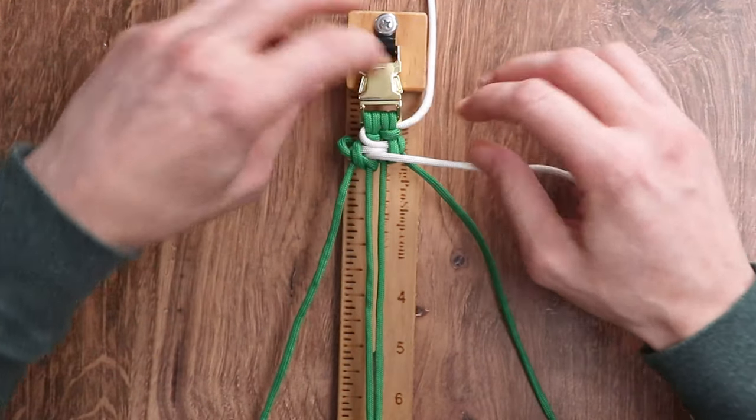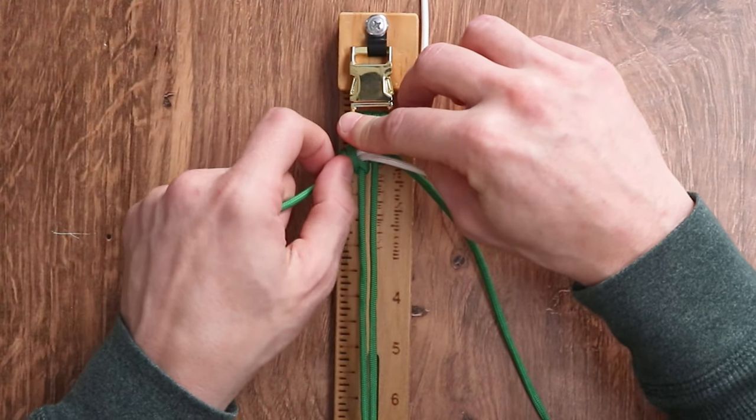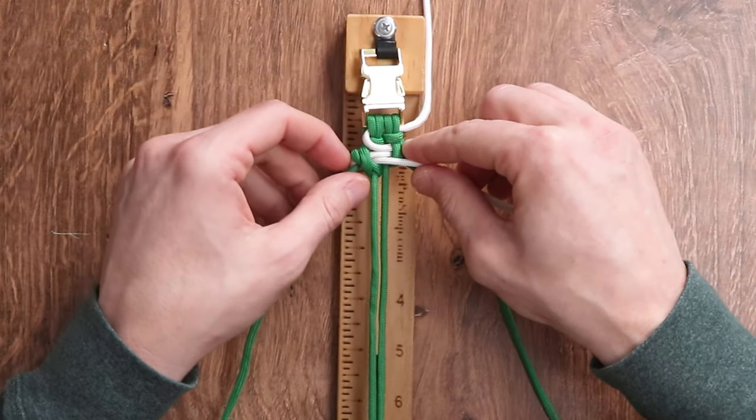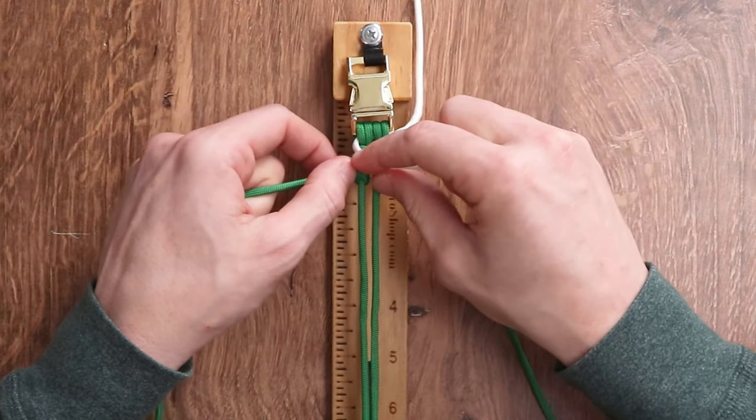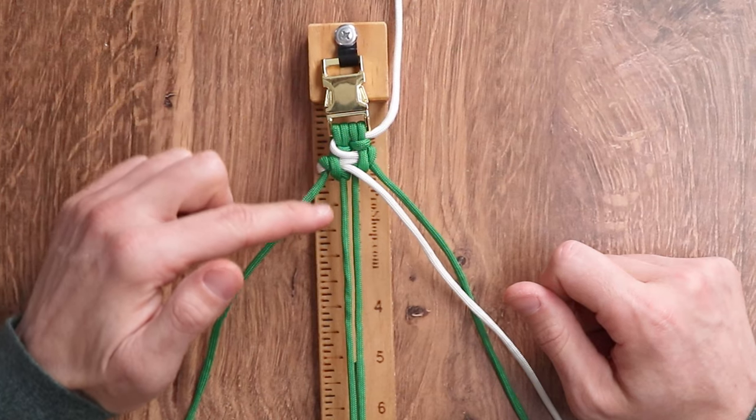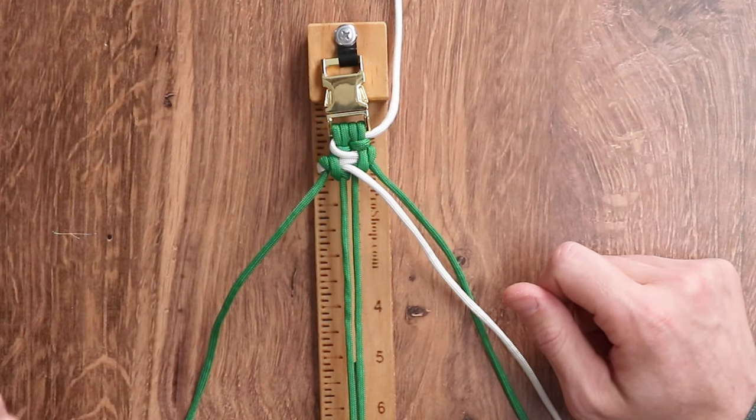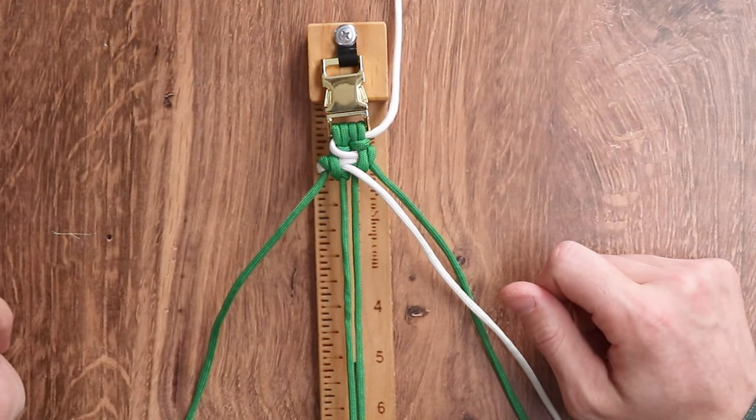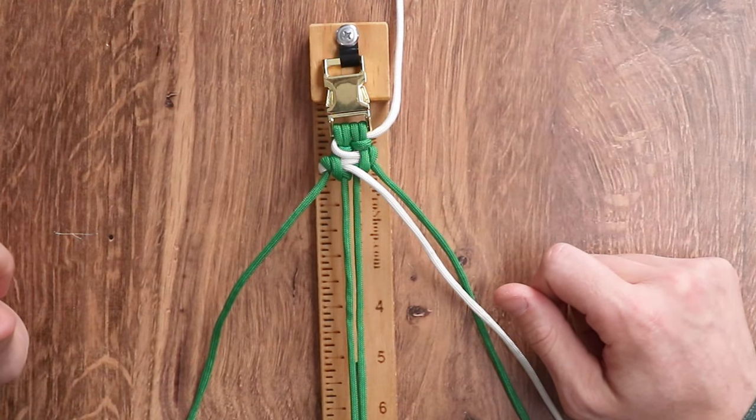We're going to go the white first, then we'll go the green, we'll go white, we'll go green. And we are just going to continue that pattern all the way down the weave. And we'll come back to the video once we get to the end, and we'll show you how we're going to wrap this bracelet up.